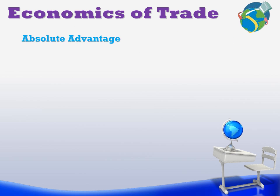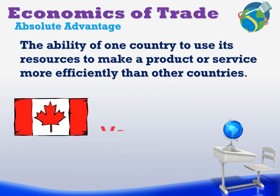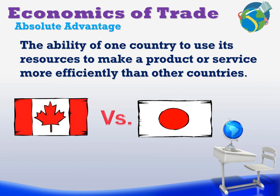We will use opportunity cost when we talk about absolute advantage. Absolute advantage has to do with two different trading countries and the ability of one country to use its resources to make a product more effectively or efficiently than the other. And vice versa, the other country could use their resources more efficiently to make certain other products. For instance, Canada and Japan — Japan is very good at making technologies while Canada is very good at making resources. This is essentially absolute advantage.